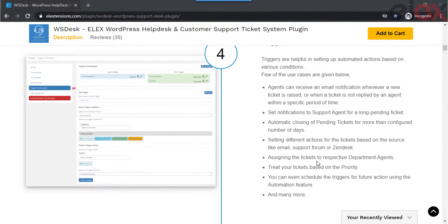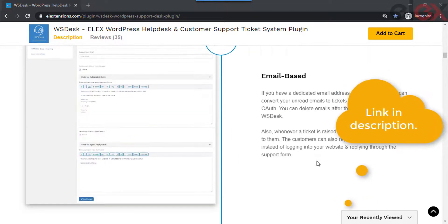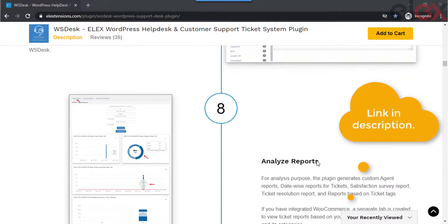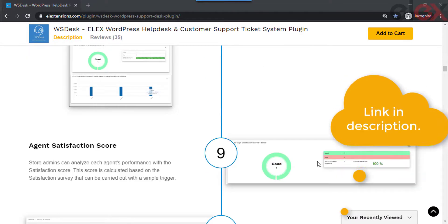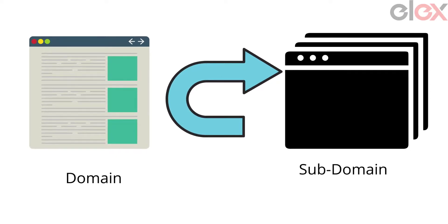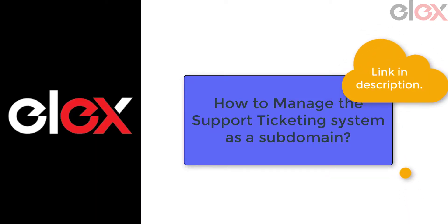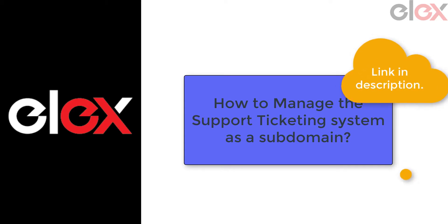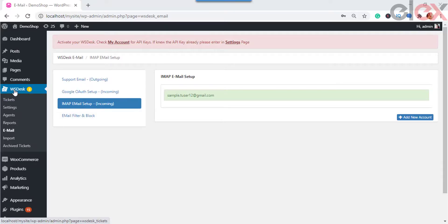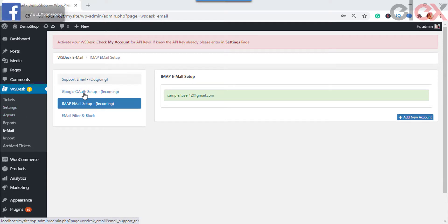Refer to the link in the description to know more about the plugin. If you want to set up your support ticketing system as a separate entity by making it a subdomain, you can also do that for better workflow of your main website as well as the support ticketing system. After activating and setting up the required features, you can set up the IMAP accounts to your helpdesk support system.